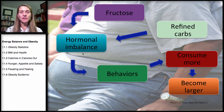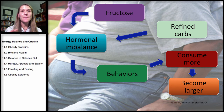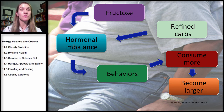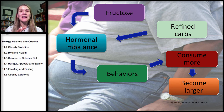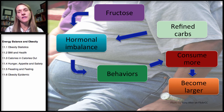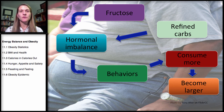Hormones really drive behavior. Insulin helps control satiety — even with high insulin from a starch-based meal, insulin signals the brain to stop eating. With fructose, we don't get that satiety signal. These hormonal imbalances drive food-seeking behavior, causing consumption of more processed foods, refined carbohydrates, and added sugars — contributing to people becoming larger.